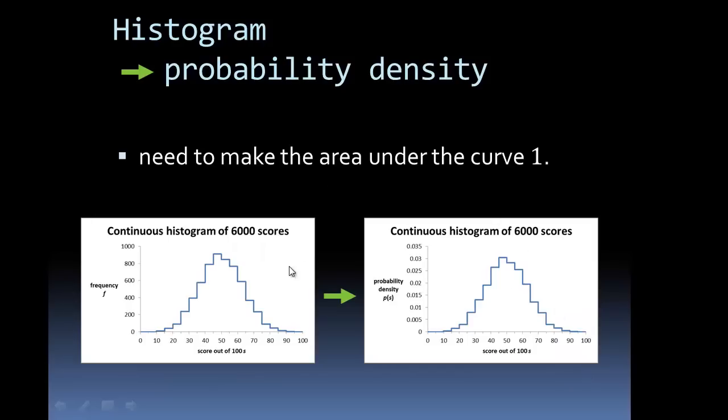So our task that we have is to go from a histogram of scores where we have frequency, a count of the number of people who got a particular score and convert it into a probability density where these numbers are the right scale so that the area under the probability density graph is actually 1.